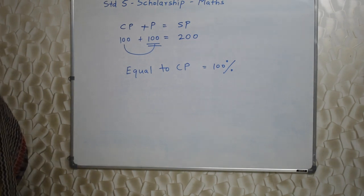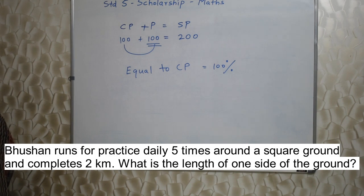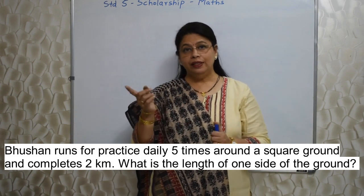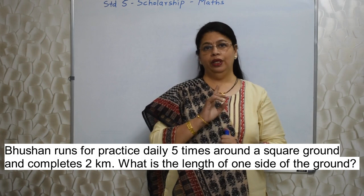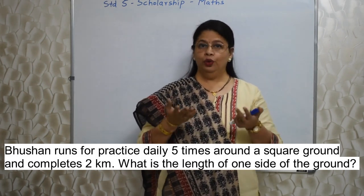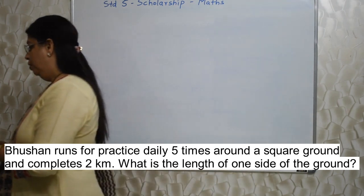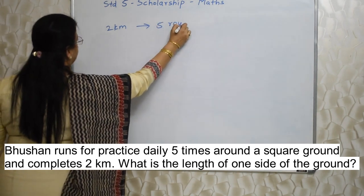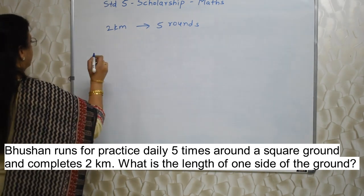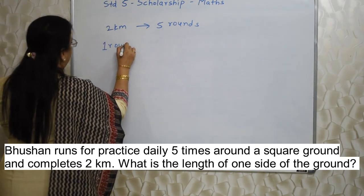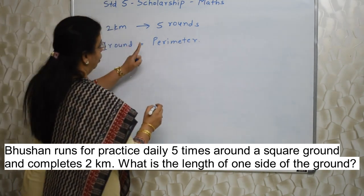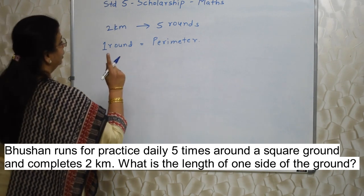Next sum: Bhushan runs for practice daily five times around the square ground and completes two kilometers. What is the length of one side of the ground? Whenever there is a sum about walking around a square or rectangular garden, or fencing or wiring around a ground, it is a sum of perimeter. One round is equal to the perimeter.